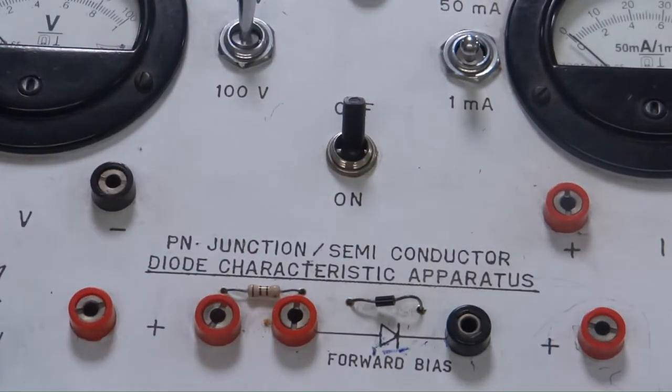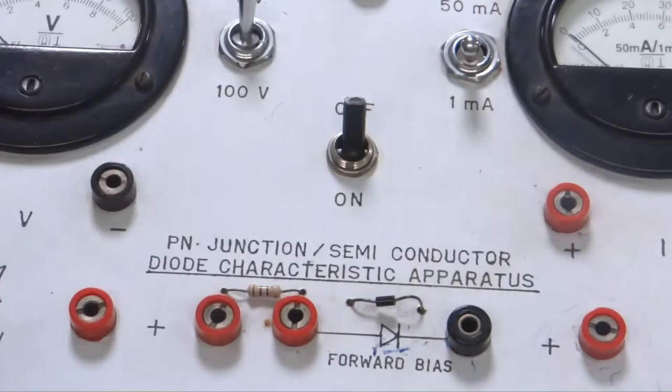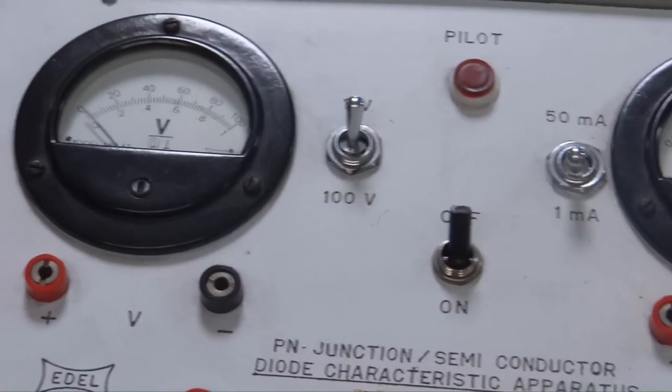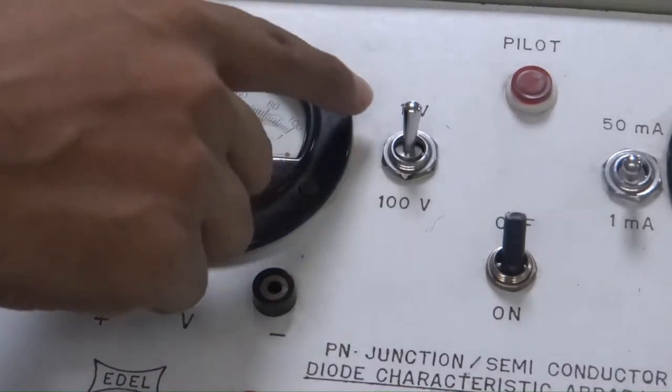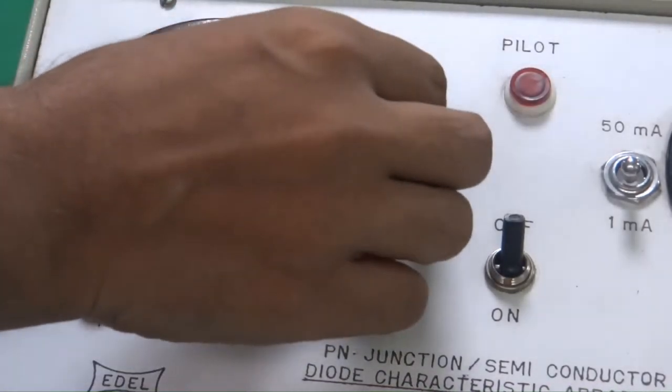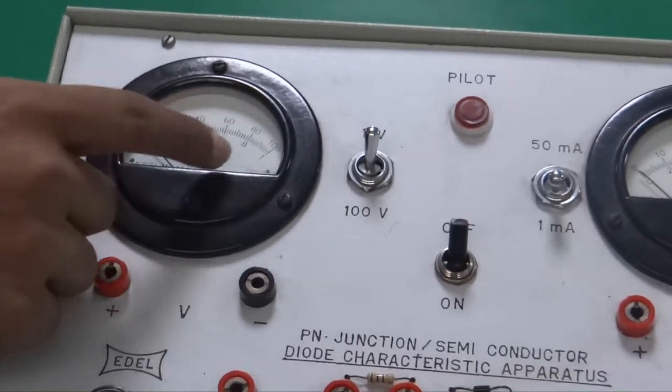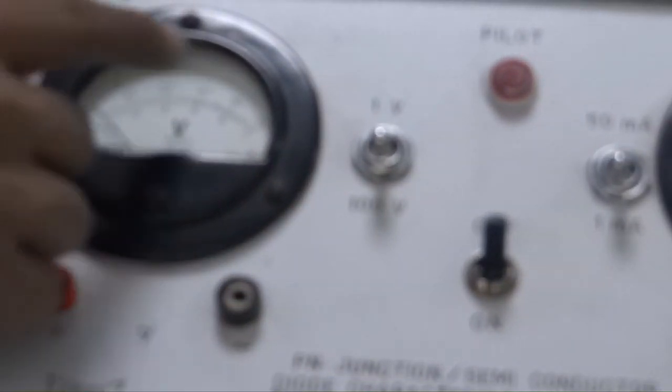Apart from this, we have got a voltmeter and ammeter. You can see over here, this voltmeter has got a dual range, that is 1 volt and 100 volt. When you place it at 1 volt, you will take the readings on the lower side. When you change it to 100 volts for the reverse bias, you will see the readings on the upper side.